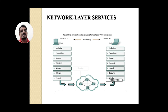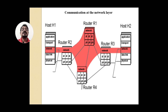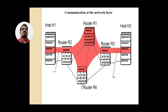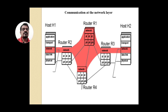In this diagram you can see how communication at the network layer takes place. The network layer protocol data has to be processed by all networking devices. For example, from host H1, data from the network layer moves down to the data link layer and physical layer, then travels via the transmission medium. At a router, data comes up through the physical and data link layers to the network layer, which identifies the destination network and forwards the packets based on the routing algorithm.